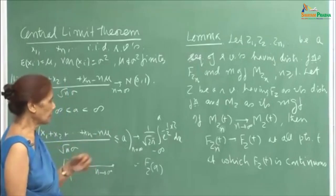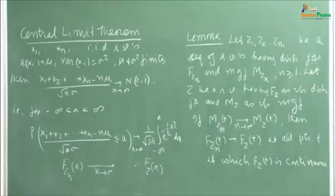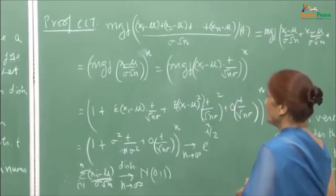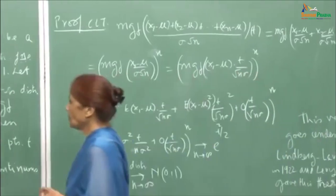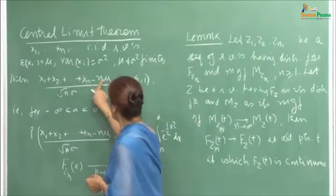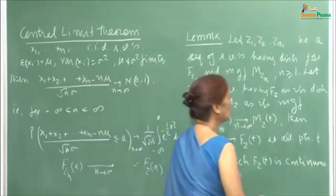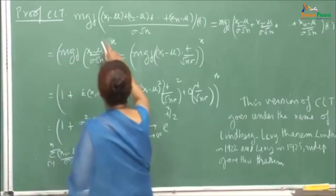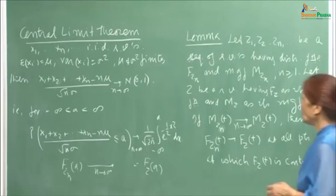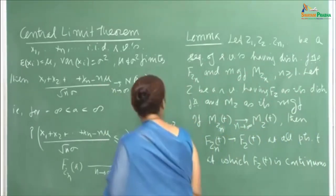The proof is not very difficult; it is straightforward. I am rewriting the random variable so that μ is attached to each of the xᵢ's. Now I write the MGF of the random variable which we want to show will converge to a standard normal variate in distribution. At a point t, the MGF is the expected value of e^{Z_n t}.